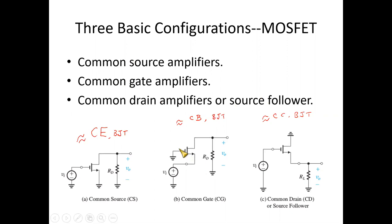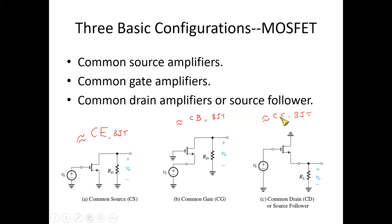In the same way, the gate is common between the input and output side, and hence it is known as the Common Gate Amplifier. Here the drain is common between the input and output side, and hence it is known as the Common Drain Amplifier. Because the output is taken at the source point, it is also known as the source follower. The Common Source Amplifier is equivalent to the Common Emitter configuration, the Common Gate Amplifier to the common base configuration, and the Common Drain Amplifier to the common collector configuration, also known as the emitter follower in the BJT.